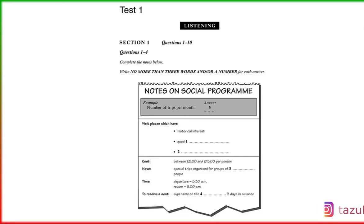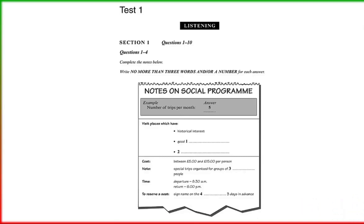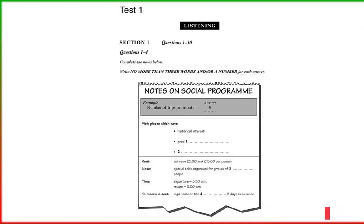Section 1. You'll hear a young student asking the social organiser of his school for information about organised trips. First, you have some time to look at questions 1 to 4.